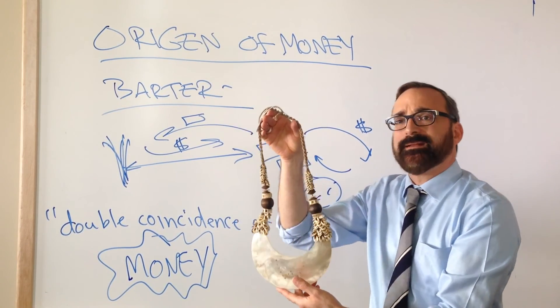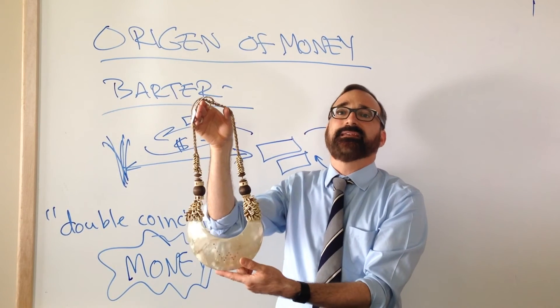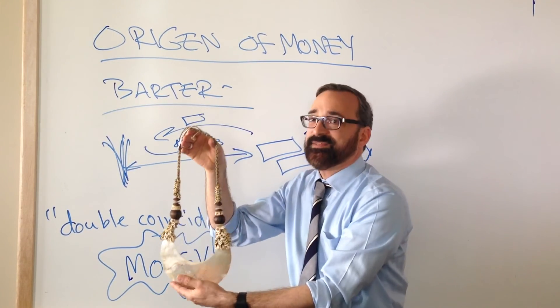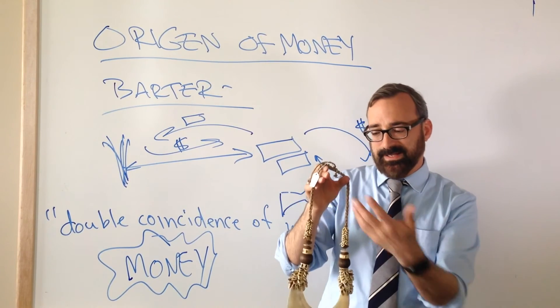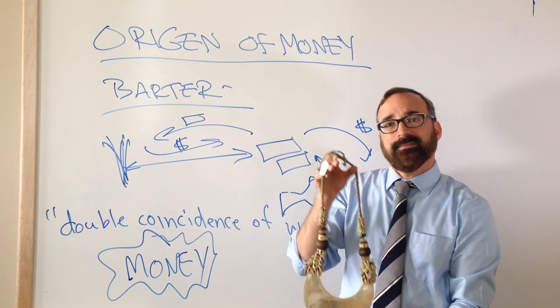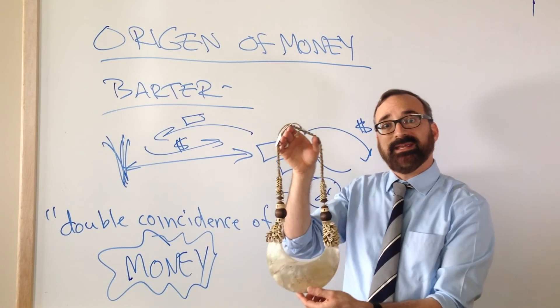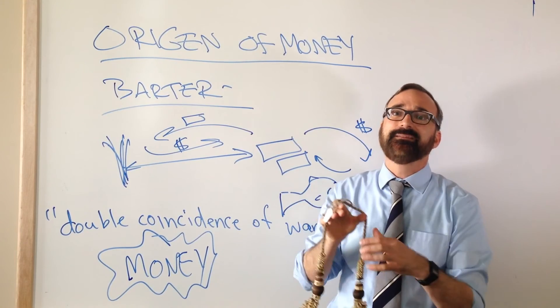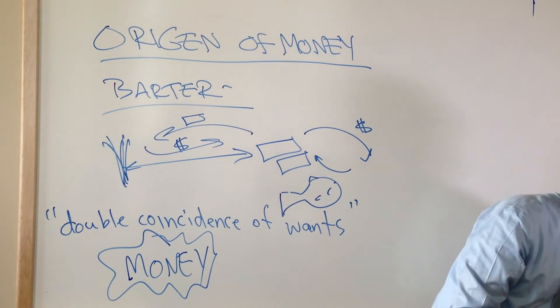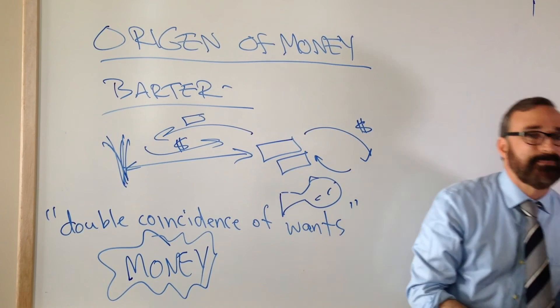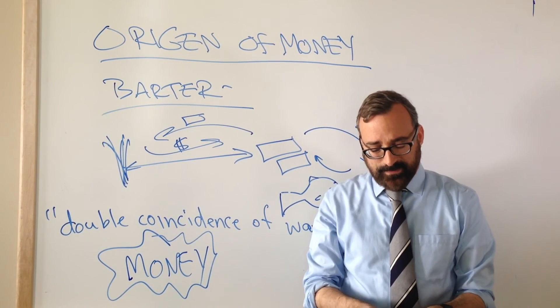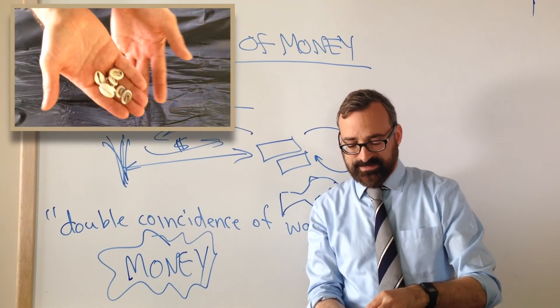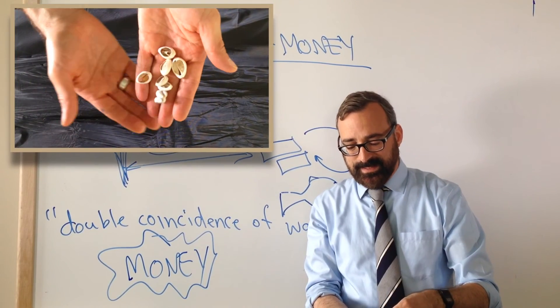Now when European colonists saw things like this in the 17th, 18th and 19th centuries, when they went to the Pacific, when they went to Africa and saw similar things made of shells, they very quickly seized on the idea that this was money and they started to circulate their own money object in those communities, primarily to buy raw materials but also slaves. So all throughout West Africa for instance, from the 17 and 1800s, Europeans got themselves into the trade in cowrie shells.